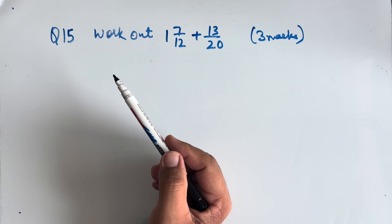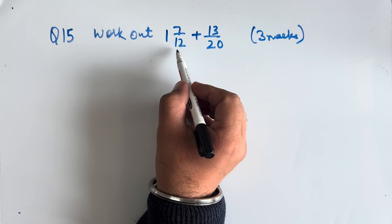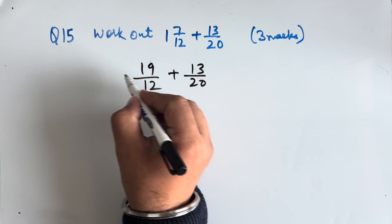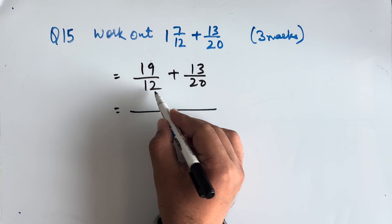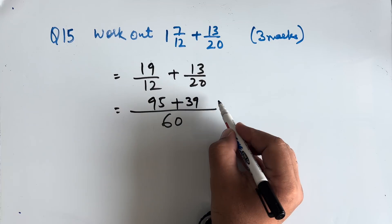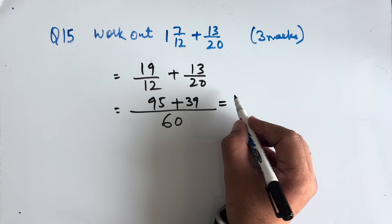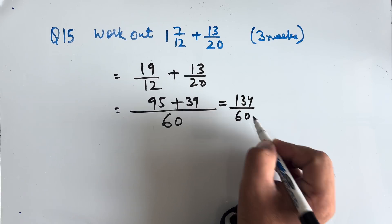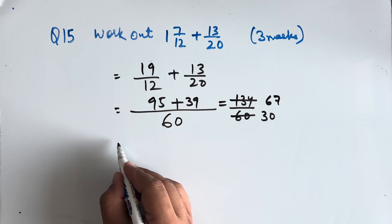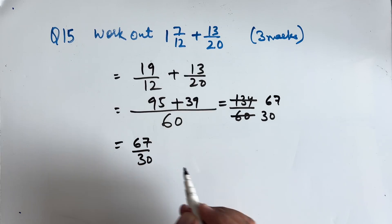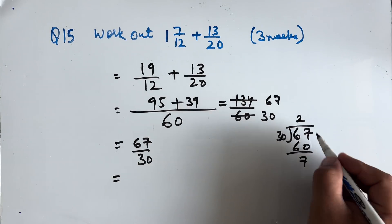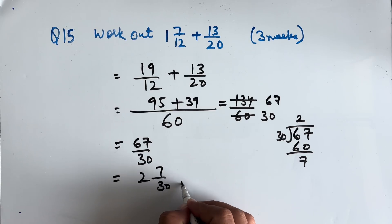Question 15: Work out 1 and 7/12 plus 13/20. This is worth 3 marks. 1 and 7/12 becomes 19/12. Taking LCM of 12 and 20, which is 60: 19 × 5 = 95, and 13 × 3 = 39. So 95 + 39 = 134/60. This simplifies by 2 to give 67/30. Dividing 67 by 30 gives 2 remainder 7, so our final answer is 2 and 7/30.